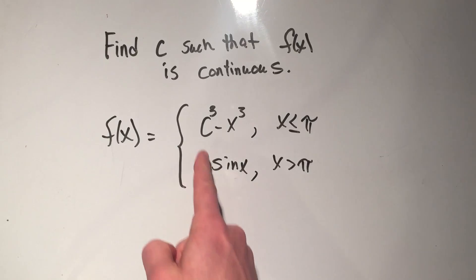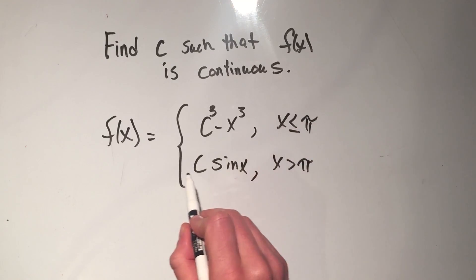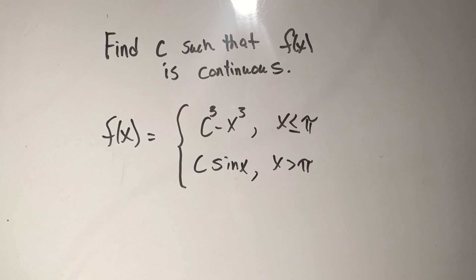I want to pick the c, so c might be 1, might be 2, might be 3, might be something else. But I want to find the c that will make this function continuous, or I want to make the c so that this side of the function meets up with this side of the function. So how am I going to do that?